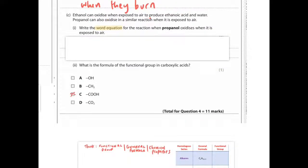Ethanol can oxidise when exposed to air to produce ethanoic acid and water. Propanol can also oxidise in a similar reaction when it's exposed to air. Write the word equation for the reaction when propanol oxidises when it's exposed to air.